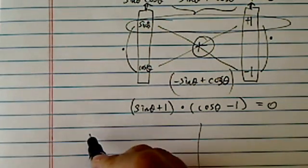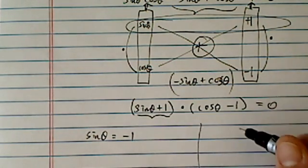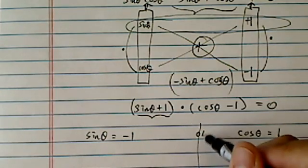So if I'm here, we're going to have two solutions. So I have sine theta equal to minus one as a solution, I'm setting this one equal to zero. And then I have a cosine theta equal to one as a solution as well.